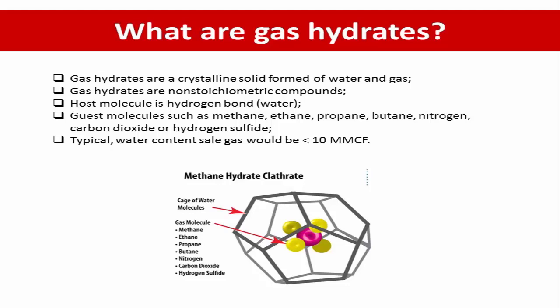They form when the host molecule forms a cage structure that contains a guest molecule such as methane, ethane, propane, or butane.